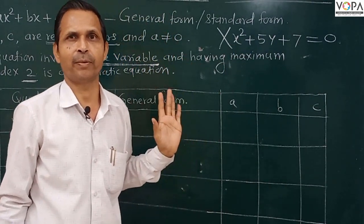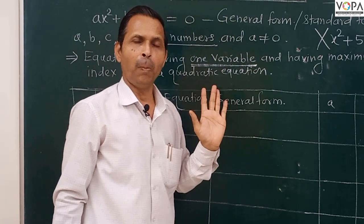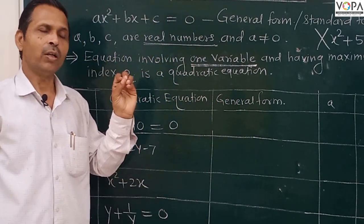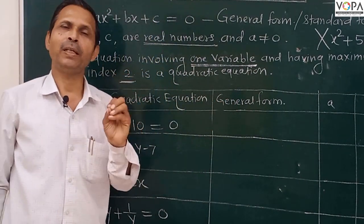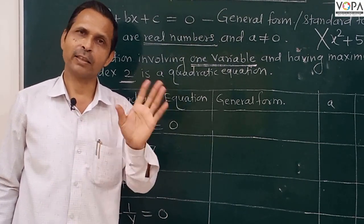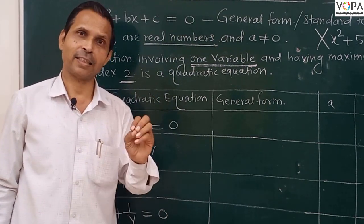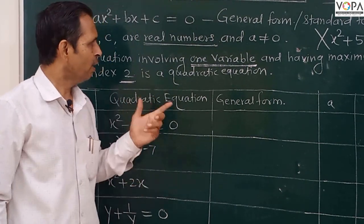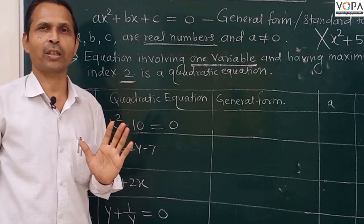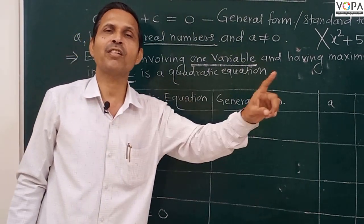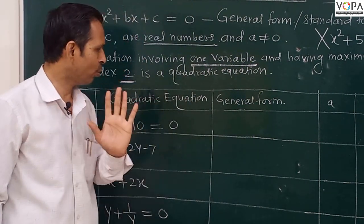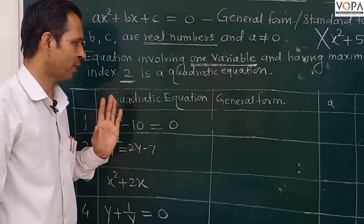For it to be a quadratic equation, it must contain only one variable throughout. The variable may be M, N, P, Q, R, S — any letter — but throughout the equation there must be only one variable. That makes it a quadratic equation.